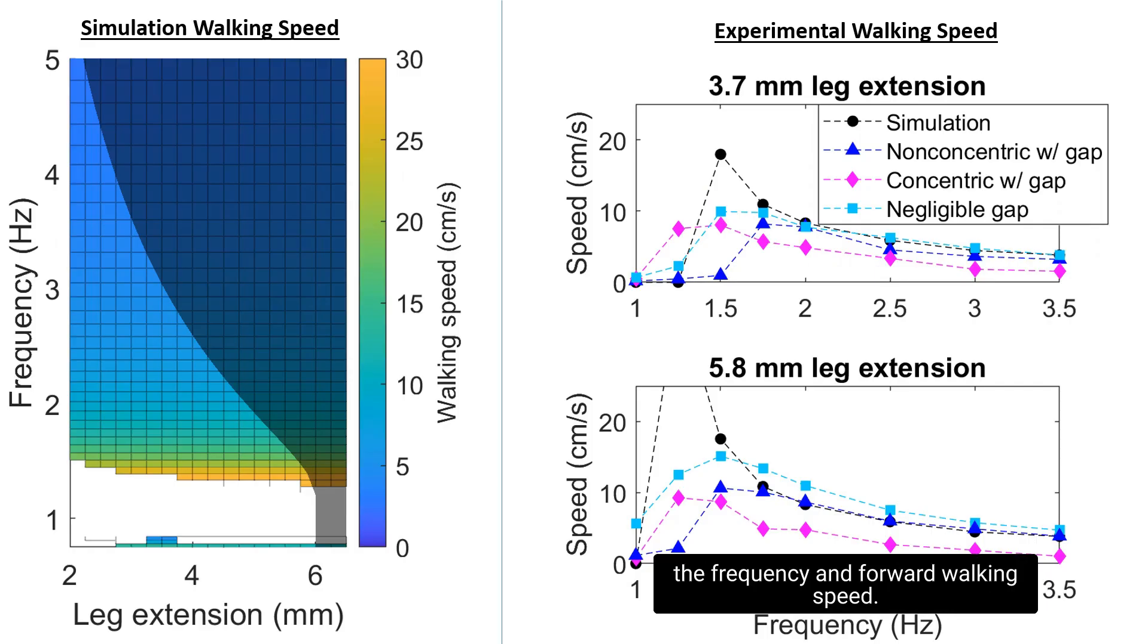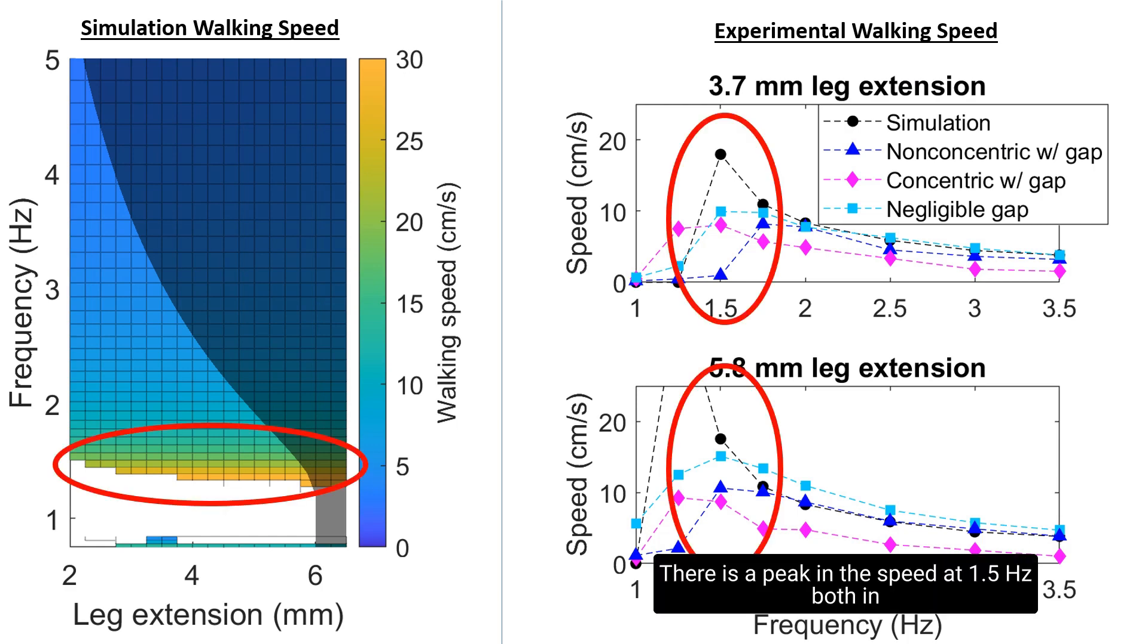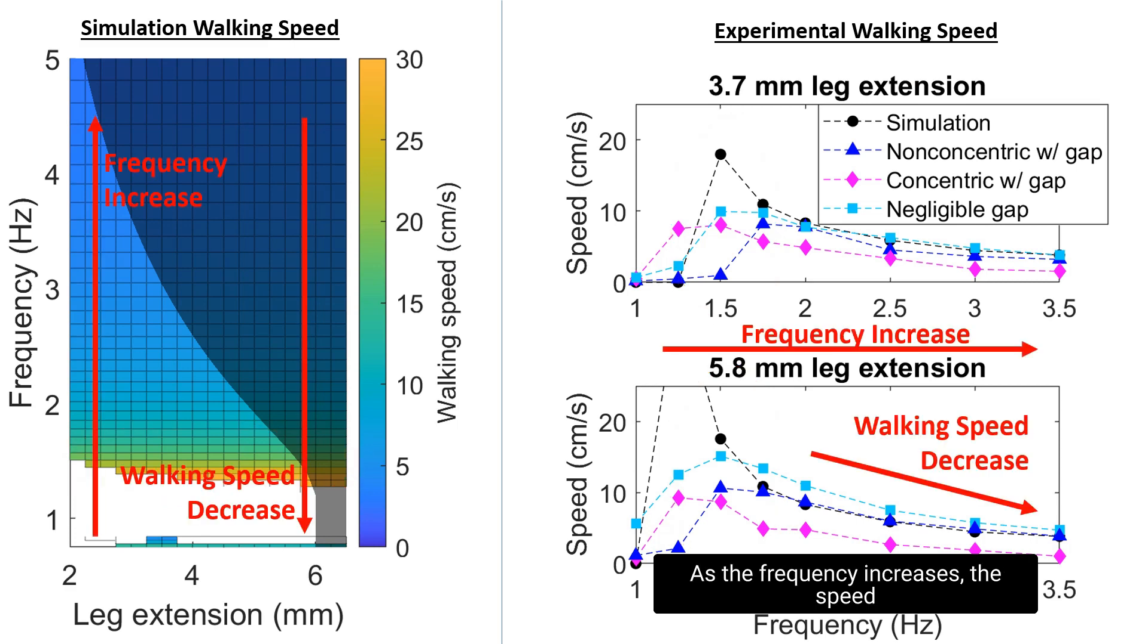We also noticed a relationship between the frequency and forward walking speed. There is a peak in the speed at 1.5 Hz, both in simulation on the left and experiment on the right. After that, as the frequency increases, the speed decreases, both in simulation and experiment.